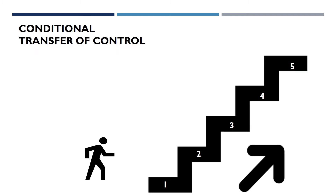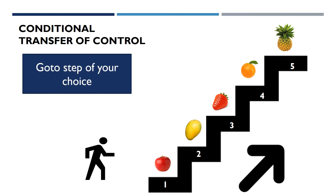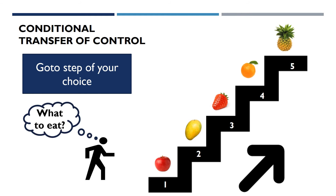Here is an example of conditional transfer of control. For example, if we have some fruits at each step and I say you go to the step of your choice, then you will think about what to eat and move on to that specific step. This is known as conditional transfer of control — on your thinking and on your choice, you will go to a specific step.